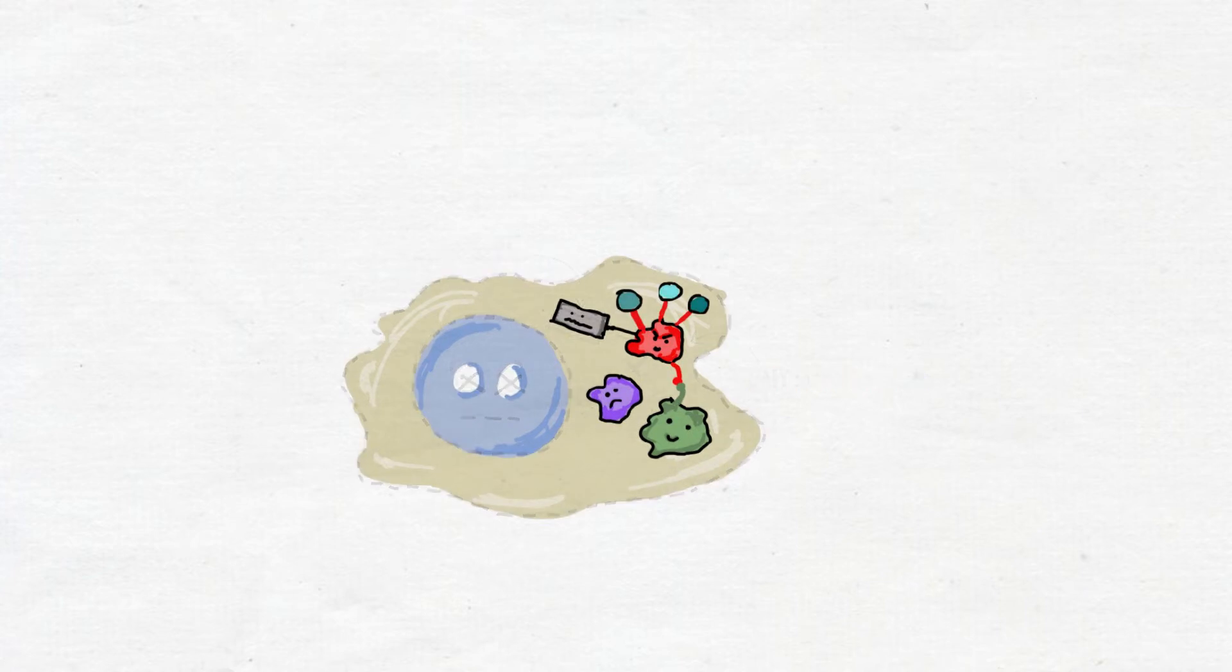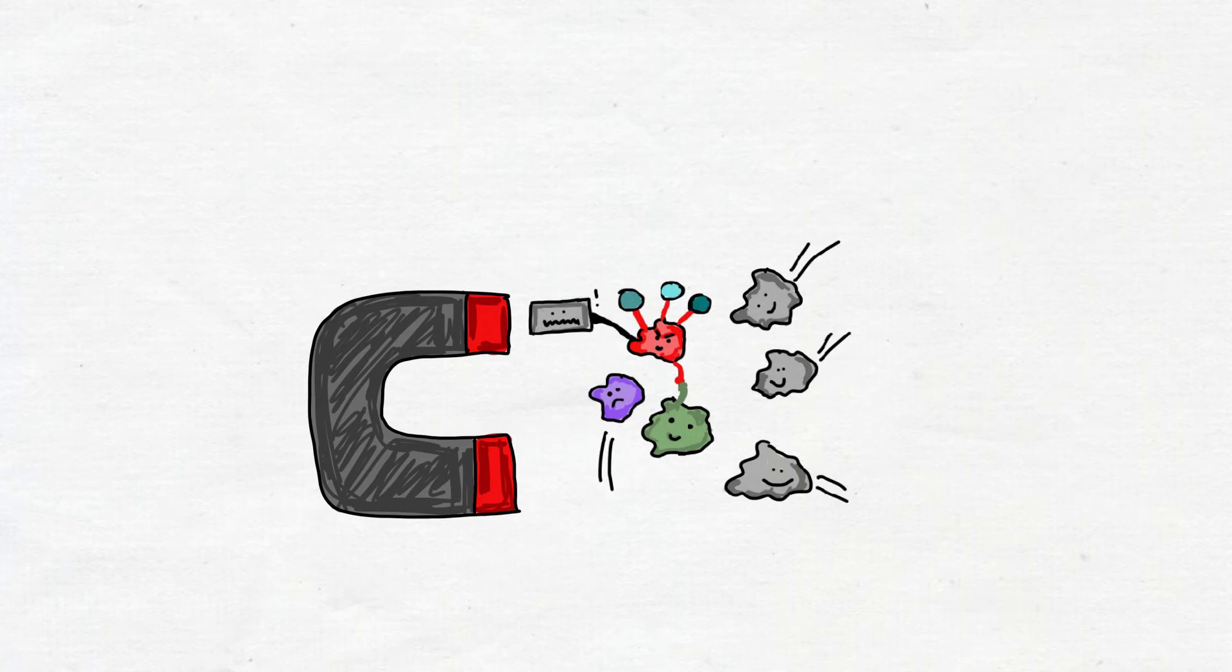We break apart the cell and collect all of its proteins. Using the tag, we pull down the bait and the proteins that interact with it. These are called prey proteins.